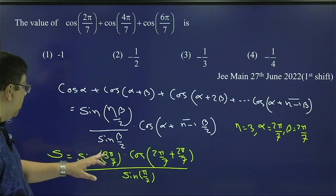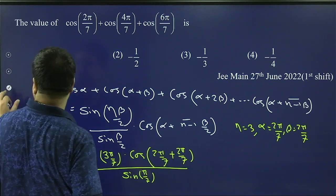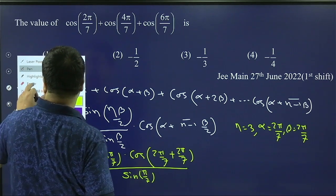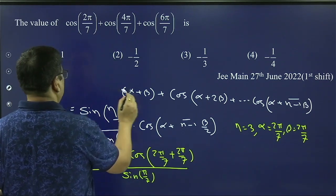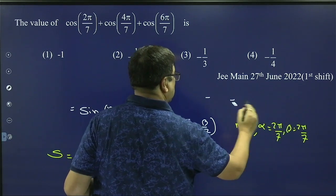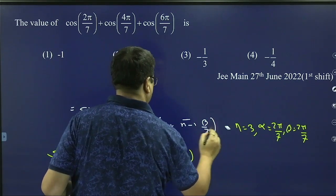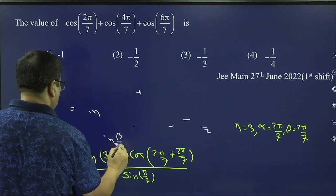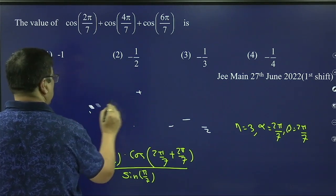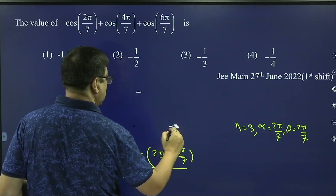It means, just if we calculate, just a minute, let us erase some part so that we can get some space. Our series part is over. So let us erase this portion. We can get some space in the board.